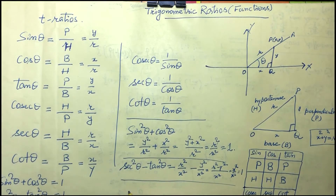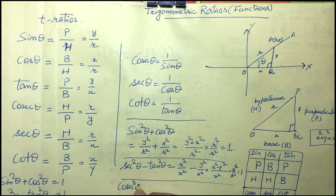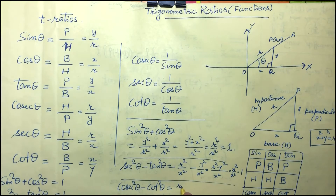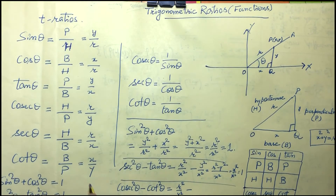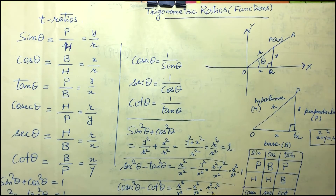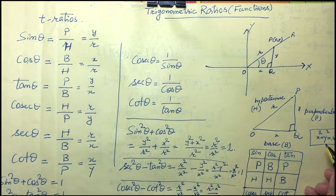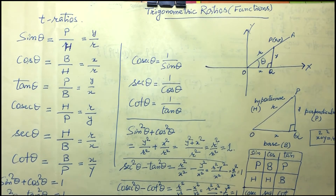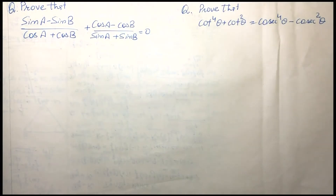The third identity is cosecant squared theta minus cot squared theta. Cosecant is r upon y, so cosecant squared is r squared upon y squared. Cot is x upon y, so cot squared is x squared upon y squared. Taking LCM gives r squared minus x squared upon y squared, which equals y squared upon y squared, giving 1.